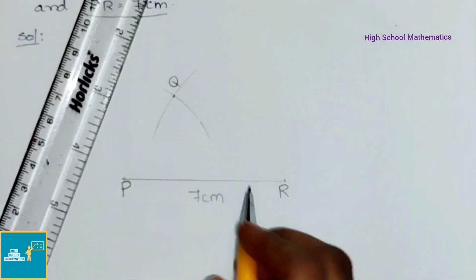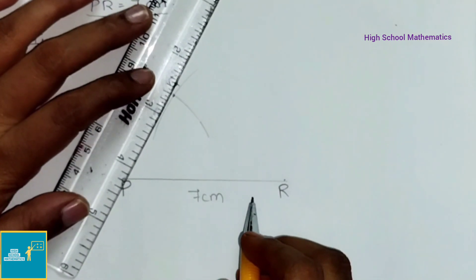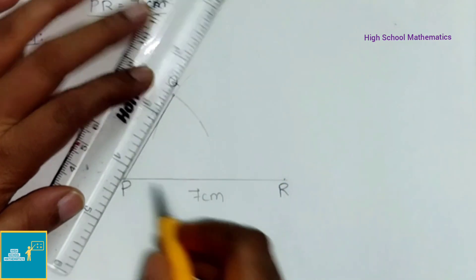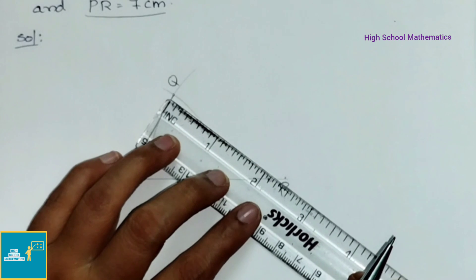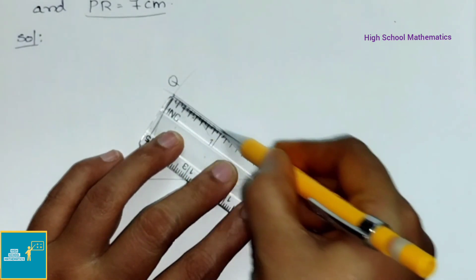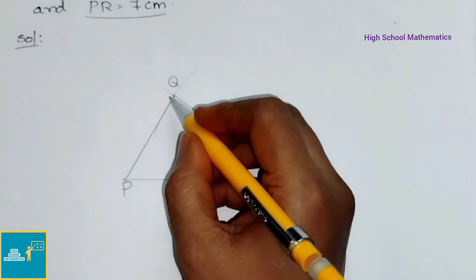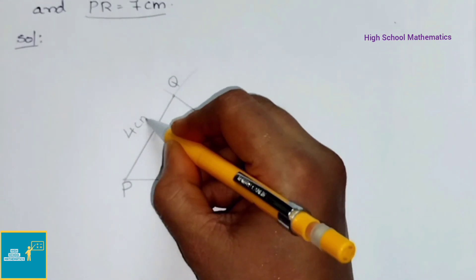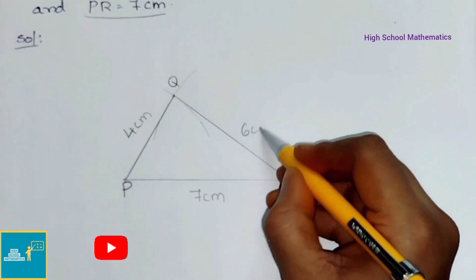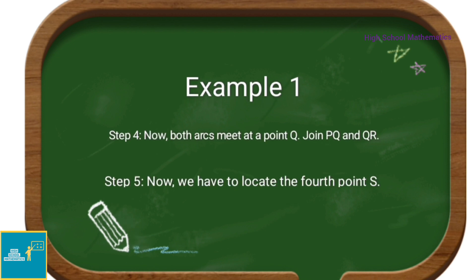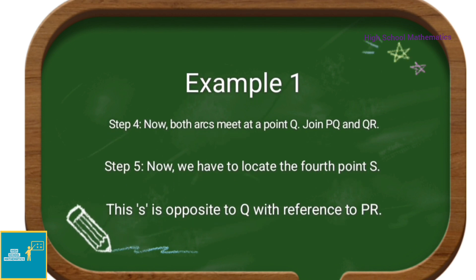With R as center, we are going to draw an arc that cuts the previous arc at point Q. Now we have to join PQ and QR. Write down PQ equals 4 cm and QR equals 6 cm. Now both arcs meet at point Q — join PQ and QR. We have done that.